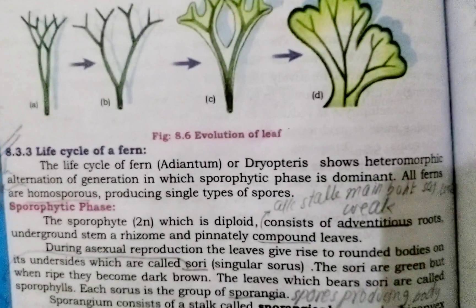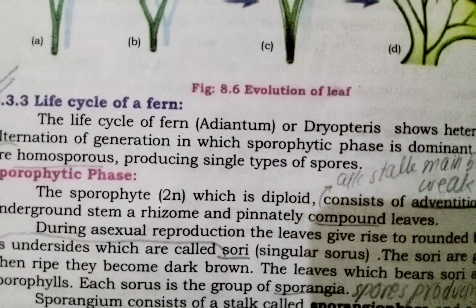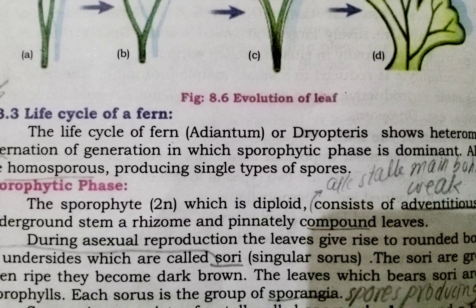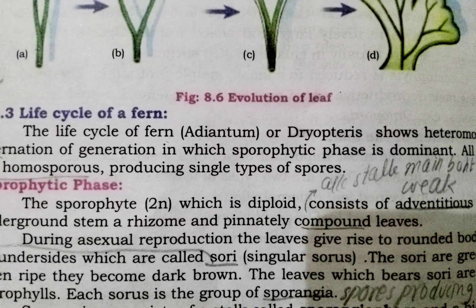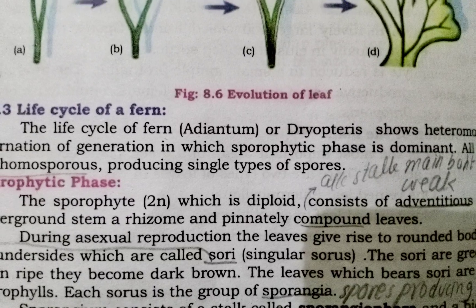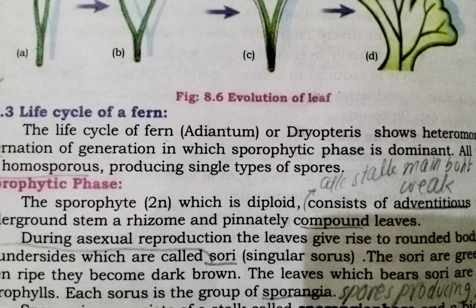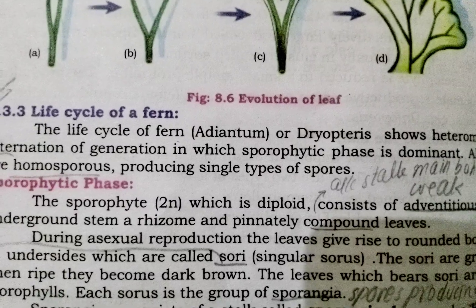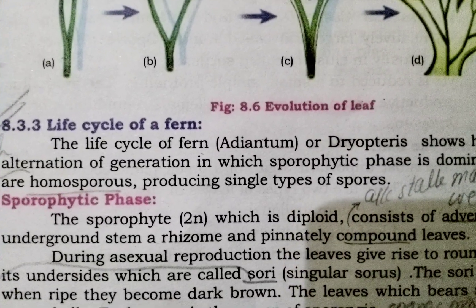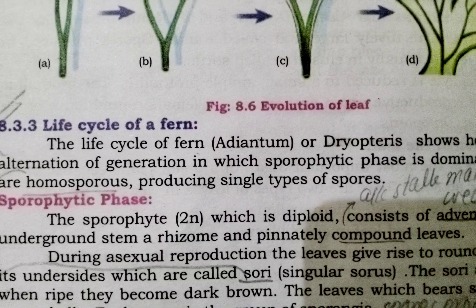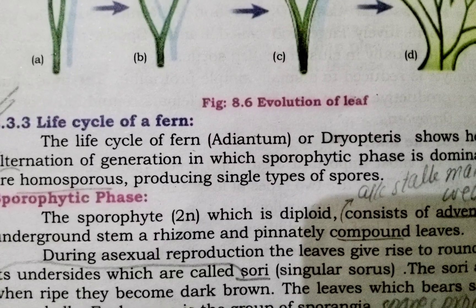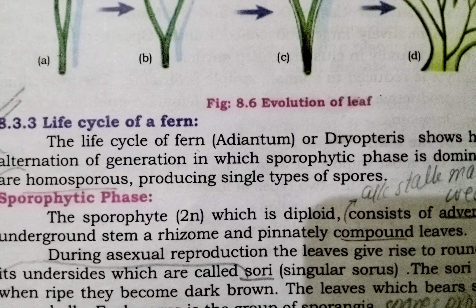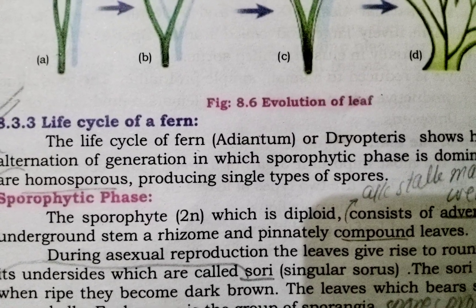All ferns are homosporous, producing a single type of spore. This means the spores are of a single type. The alternation of generation is heteromorphic, not isomorphic. Isomorphic means the sporophyte generation is similar to the gametophyte generation, but here the gametophyte generation and sporophyte generation are different from each other.